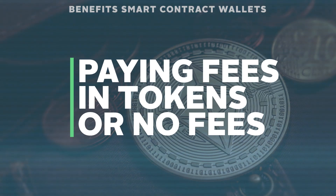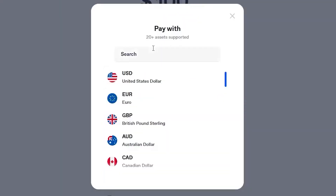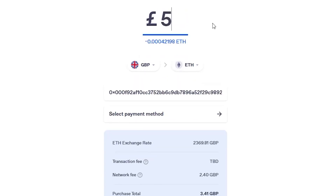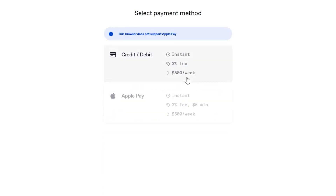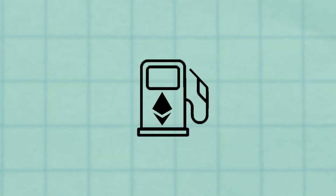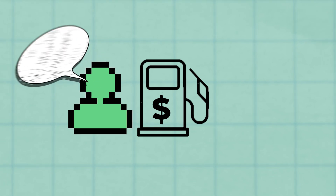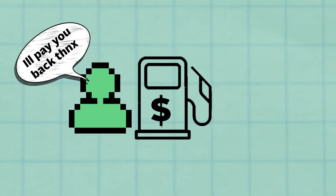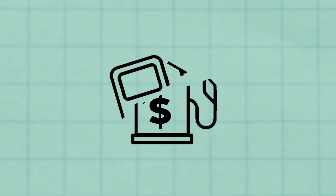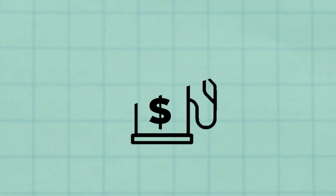Paying fees in any token or no fees at all. Having to fund new wallets with ETH to start transacting is one of the first hurdles that new users have to overcome. Smart contract wallets could allow gas payments in any token, or even to pay for someone else's gas. This means that projects could choose to offset and subsidize gas fees for users when interacting with certain dApps.